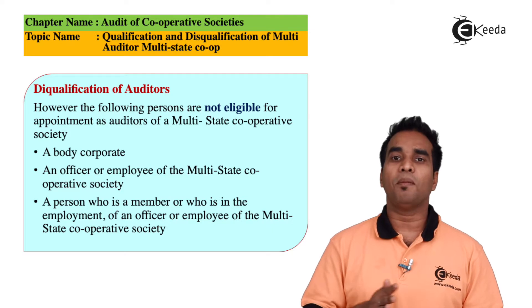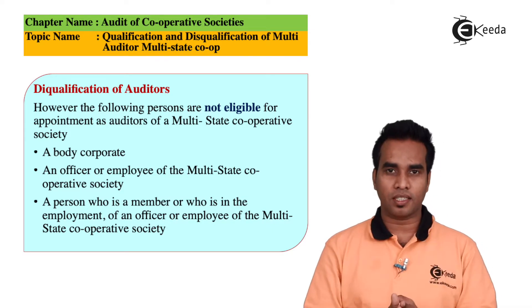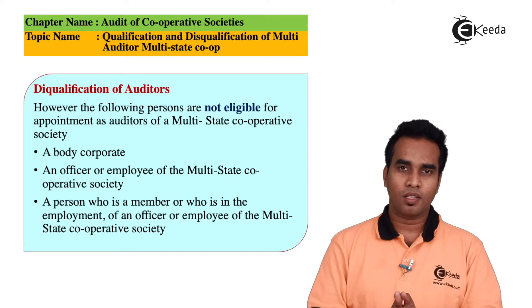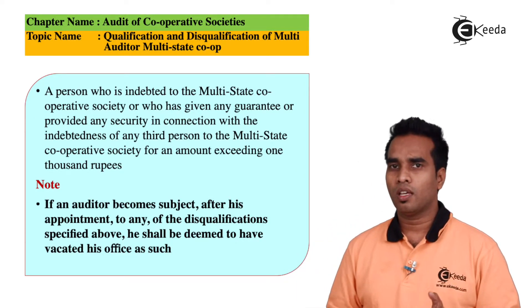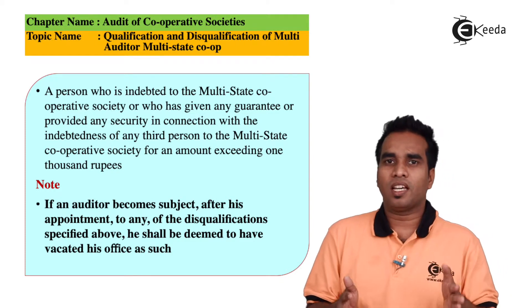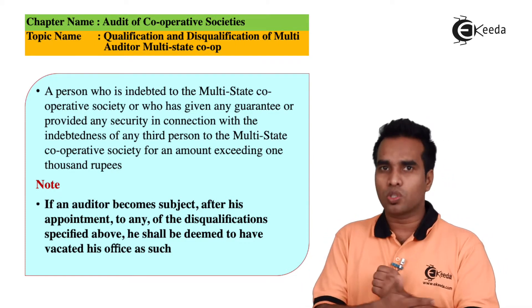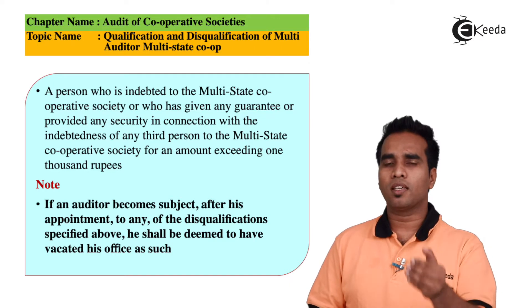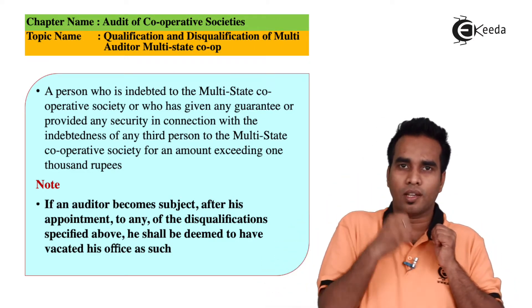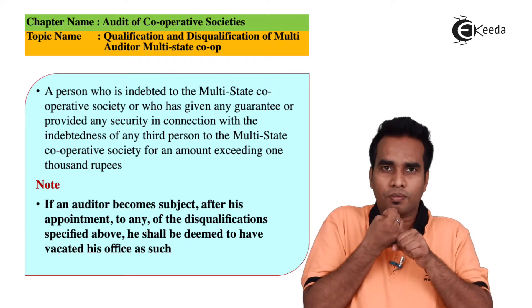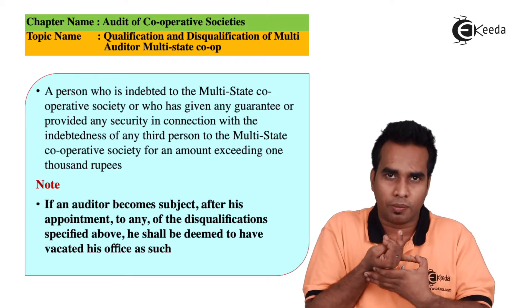Second point: an officer or employee of the Multi-State Cooperative Society cannot conduct the audit. Third point: any person who is a debtor of the society for more than one thousand rupees also cannot become an auditor of the cooperative society.